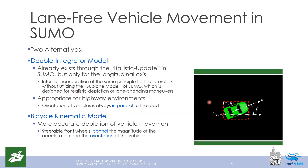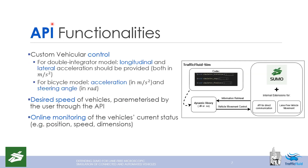For applications requiring a more accurate depiction of vehicle movement, we also implemented the bicycle kinematic model, which considers that the front wheels are steerable. Therefore, we control both the acceleration and the direction of the vehicles. Depending on the choice of vehicle movement dynamics, the user provides different control values from the dynamic library: either two acceleration values — longitudinal and lateral — for the double integrator, or the magnitude of acceleration and the steering angle for the bicycle model.